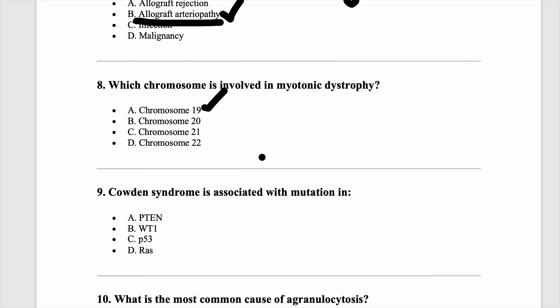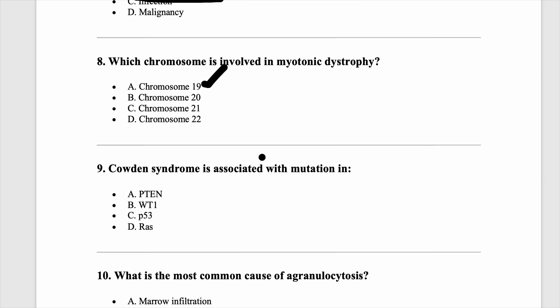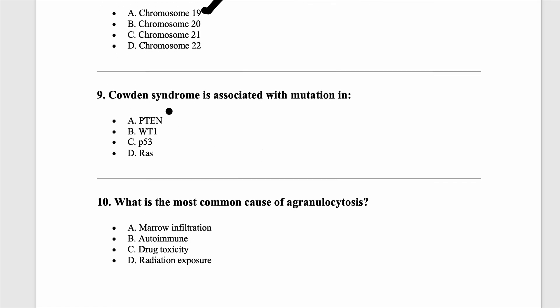Some one-liners: myotonic dystrophy is linked to chromosome 19. Cowden syndrome has to do with PTEN — PTEN hamartoma syndrome is Cowden syndrome, with increased risk of colonic tumors and breast cancers. WT1 is associated with Wilms syndrome — both WAGR syndrome and Denys-Drash syndrome. P53 is Li-Fraumeni syndrome. RAS is a proto-oncogene, not syndromic. The most common proto-oncogene mutated, and overall the most common gene mutated, is P53.